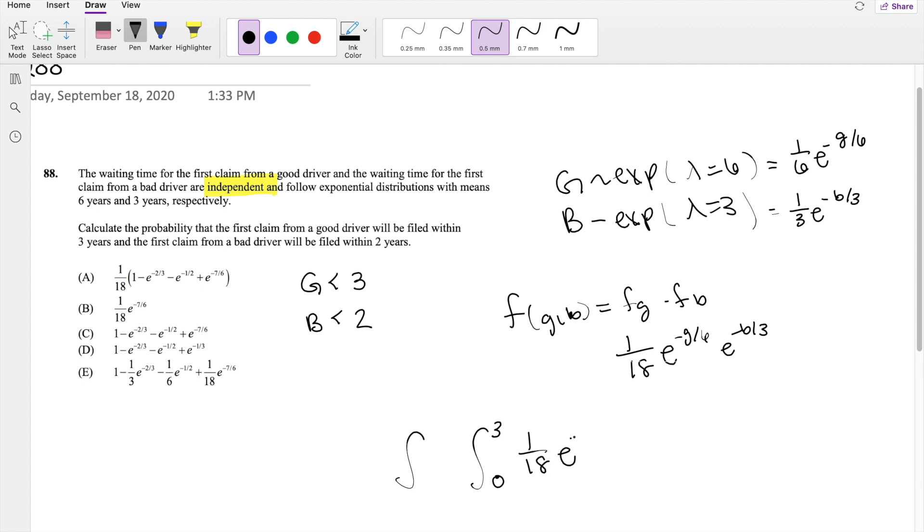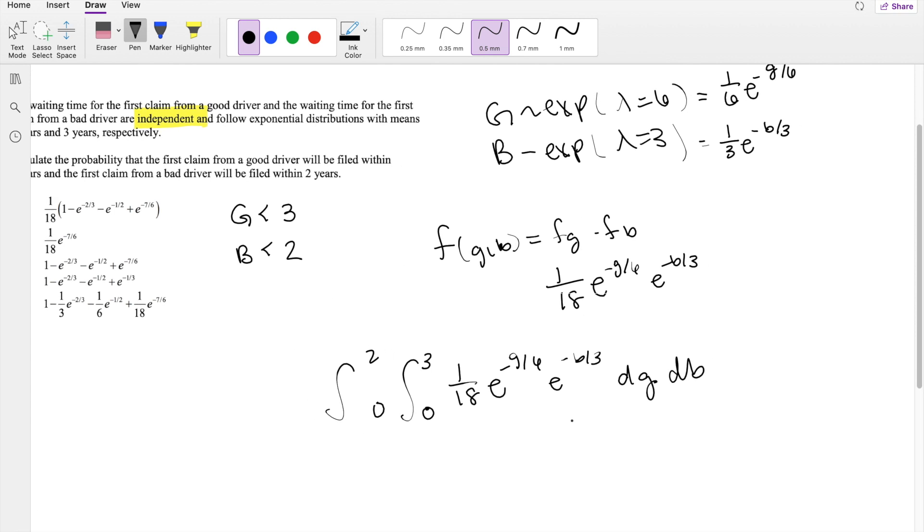And our function is going to be 1 over 18, e to the negative g over 6, e to the negative b over 3, dg. And for bad drivers, it's going from 0 to 2, because it's saying within, so it has to be less than 2 and less than 3.